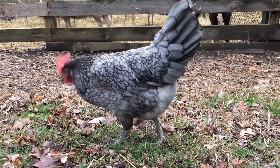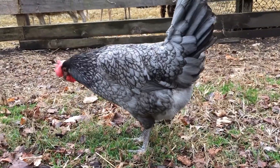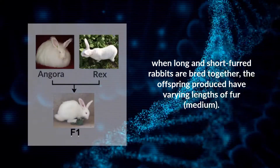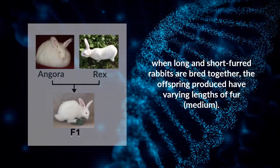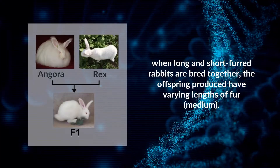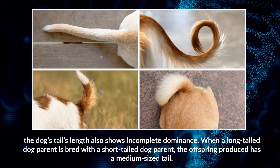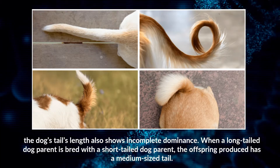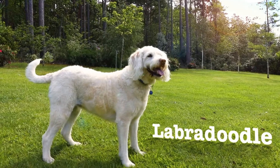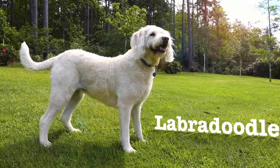This incomplete dominance in chickens occurs due to a diluting gene that reduces the intensity of the effect of melanin and lightens the color of the feathers in the offspring. Another example is when a long-furred and short-furred rabbit are bred together — the offspring produces a medium-length fur. Usually, the breeding of a short-furred Rex and a long-furred Angora produces medium-length fur. Similarly, dog tails also show incomplete dominance: when a long-tailed dog parent is bred with a short-tailed dog parent, the offspring has a medium-sized tail. Another example is the Labradoodle, which has wavy hair resulting from straight and curly-haired parent dogs being bred.